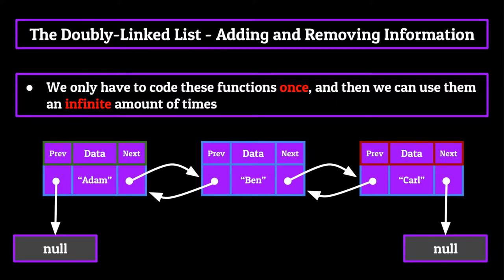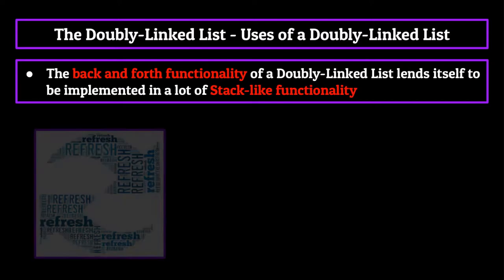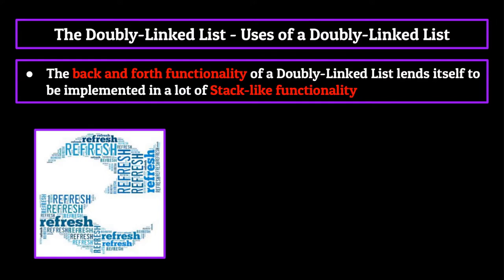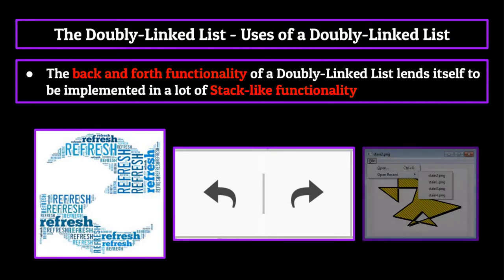The back-and-forth functionality of a doubly linked list lends itself to a lot of stack-like functionality — browser caches which allow you to go back and forth between web pages, the undo-redo functionality in many programs, applications which allow an open recent functionality. The list goes on and on.